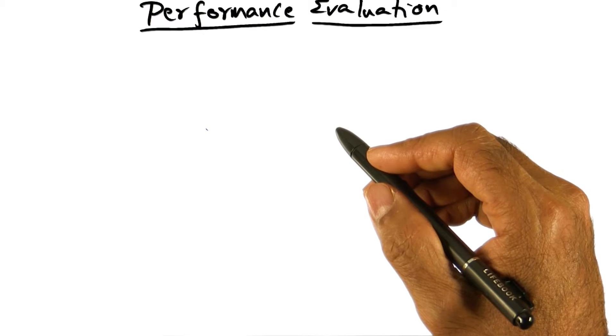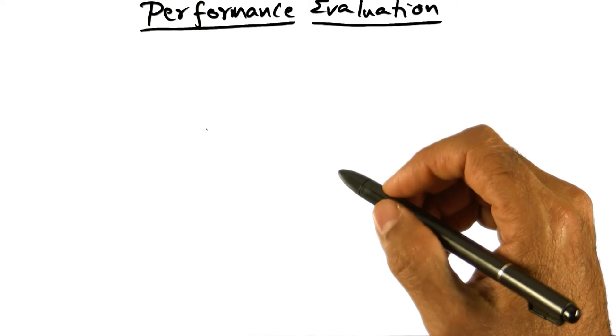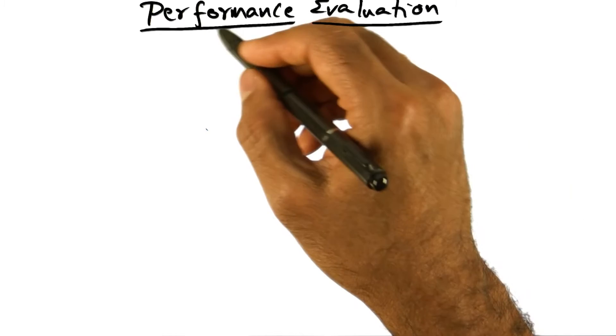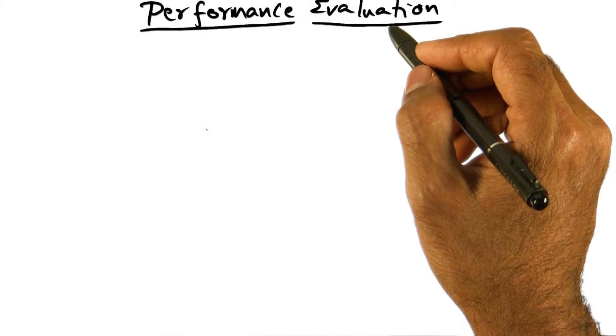We covered a lot of ground discussing different synchronization algorithms for parallel machines, both mutual exclusion locks as well as barriers. Now it's time to talk a little bit about performance evaluation.